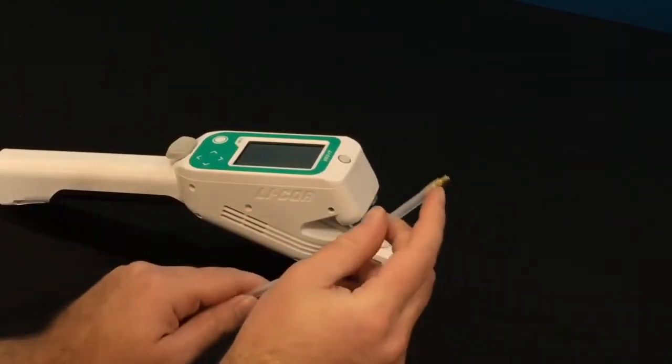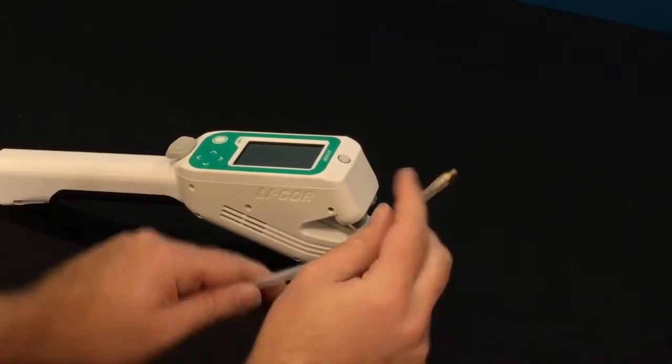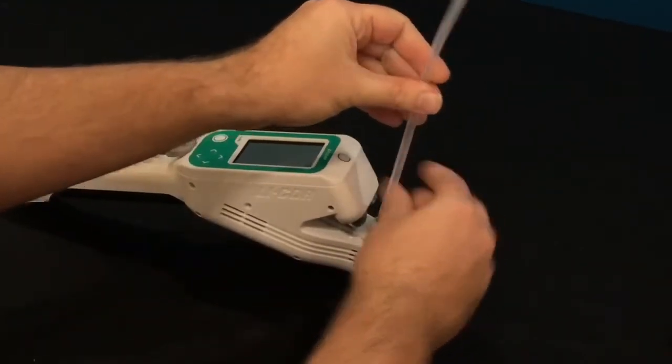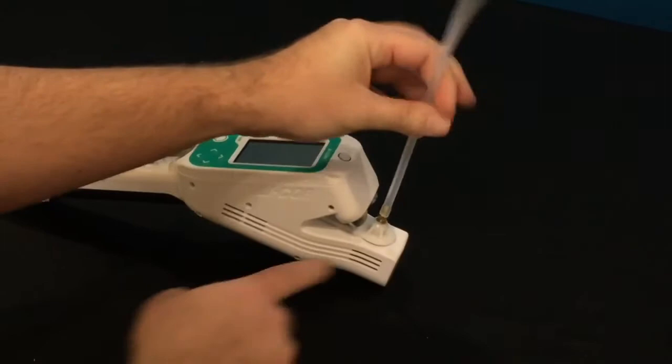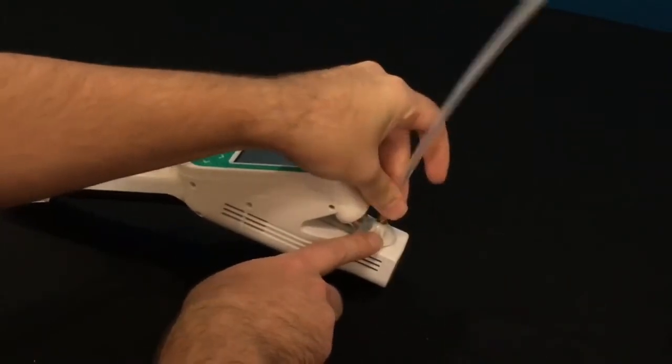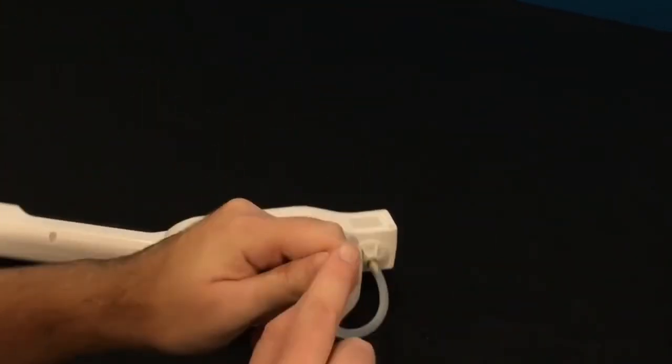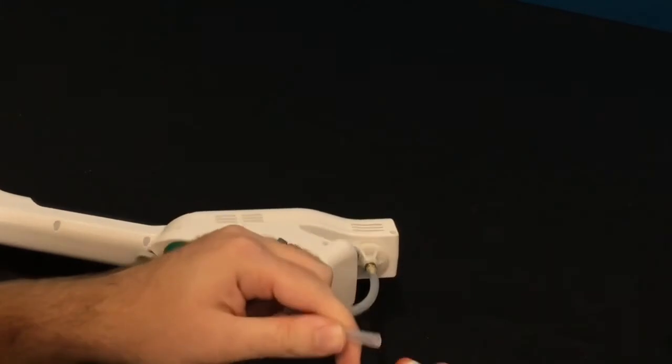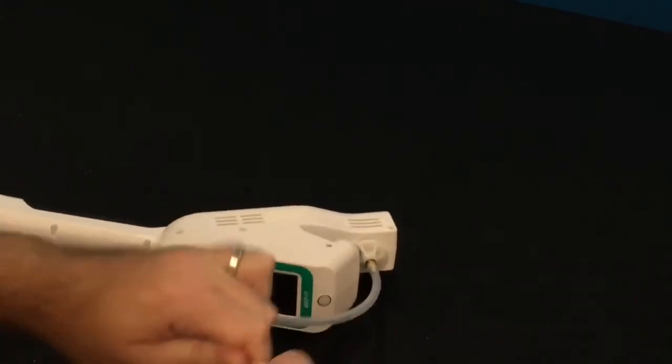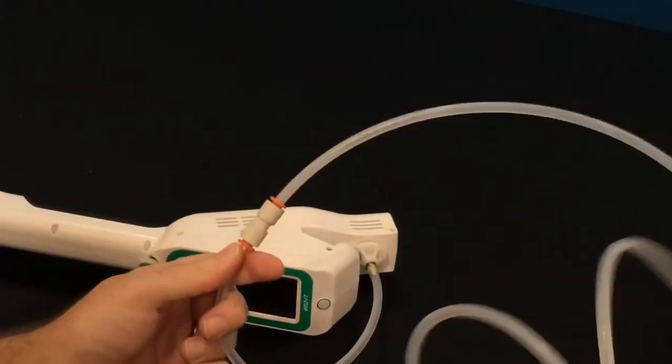Now you'll take the 1032 hose barb that came with the instrument and connect it to the calibration clamp. Then connect this end of the tubing with a quick connect to your tank or dew point generator.